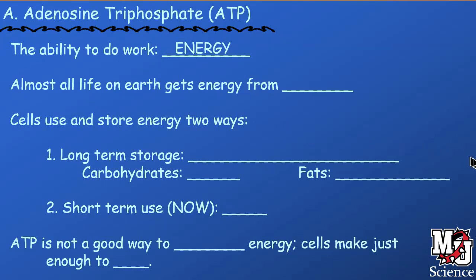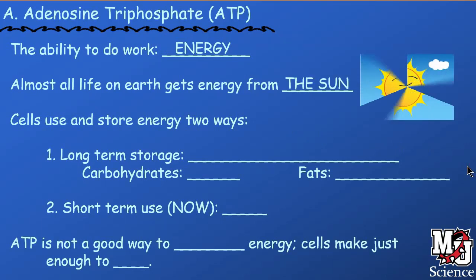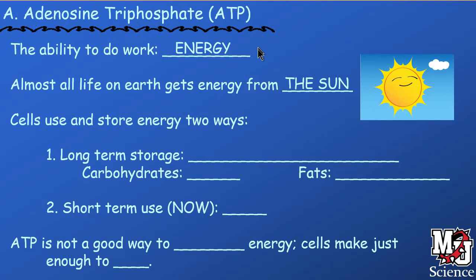Almost all life on the planet gets its energy from the sun. Plants are harvesting that sunlight energy and turning it into molecules that we will eat and consume, which we can then turn into usable energy. That usable energy is in the form of adenosine triphosphate.